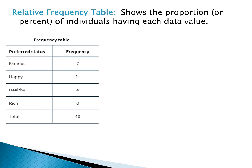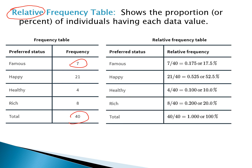If we're asked to make a relative frequency table, we've added one word to the title — the word 'relative.' When we see the word relative in this class, we're talking about proportions or percentages. We take each of those frequency values and divide by the total to convert it into a percentage. For example, famous would be 0.175, or 17.5%. You could write it as a decimal or a percentage — I typically write it as decimals. We do that for each category, and it should total 1.00 when we add all the values.